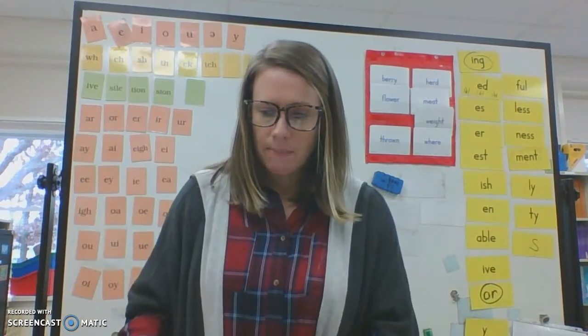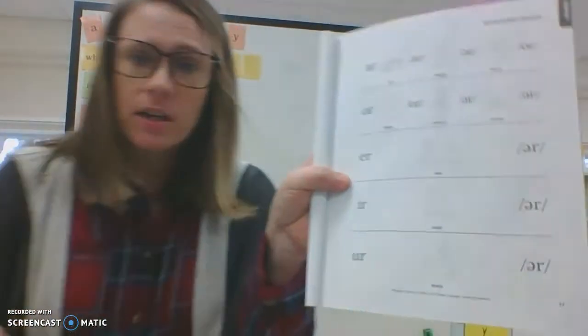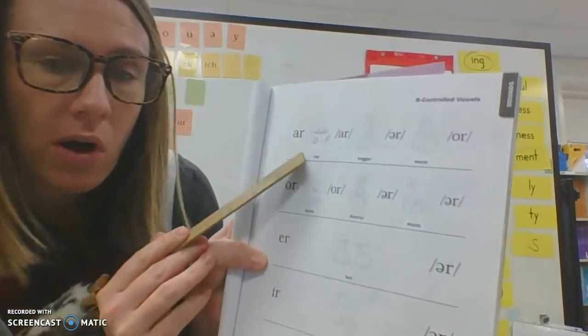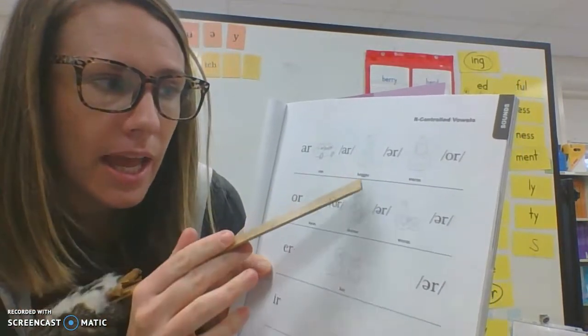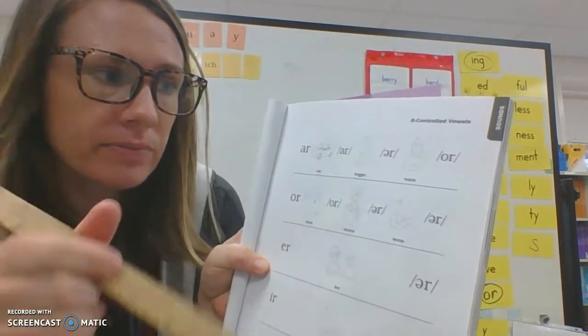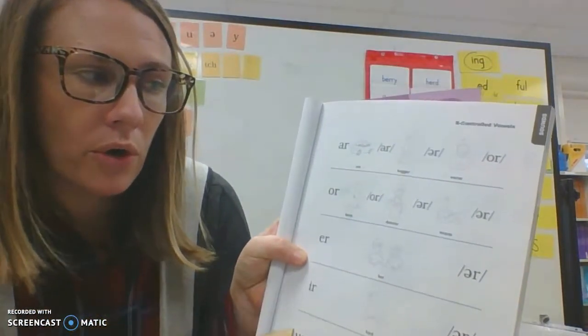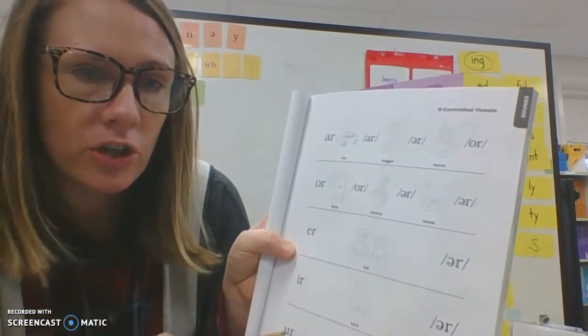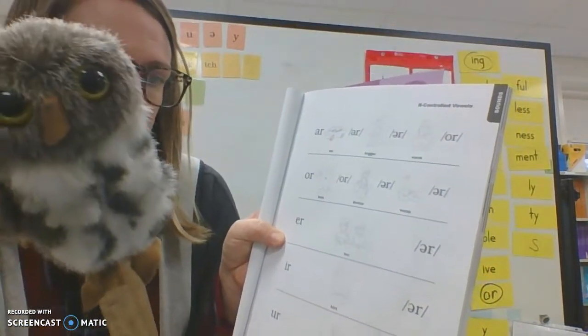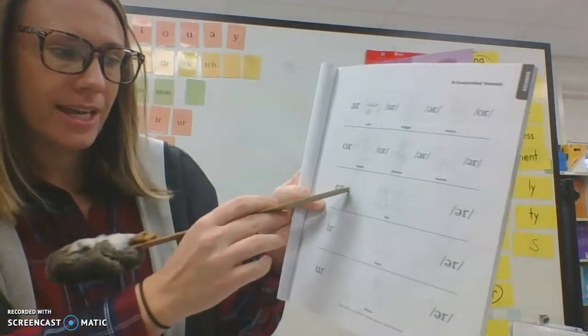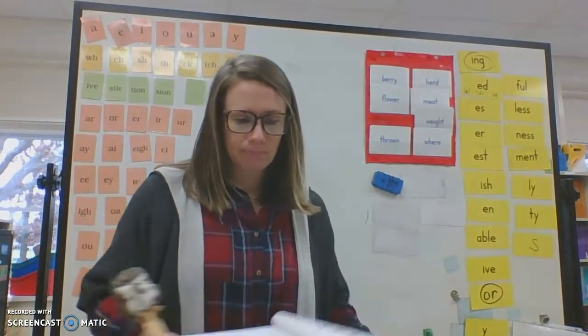And now let's flip back a page and review some of the R control vowels. Go ahead and find the A-R. Let's do all the sounds that A-R can make. A-R, car R. A-R, beggar R. And let's do O-R. O-R, horn R. O-R, doctor R. O-R, worm R. And then we know that E-R, I-R, and U-R all say R. Nice job. Good.